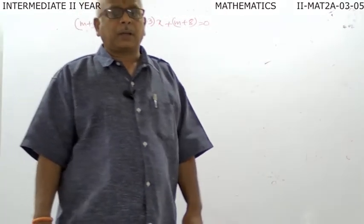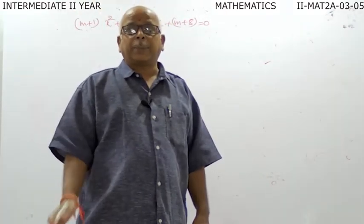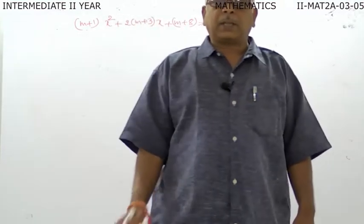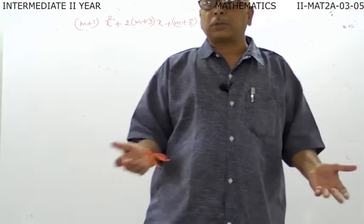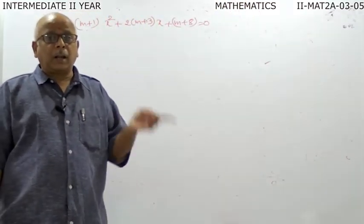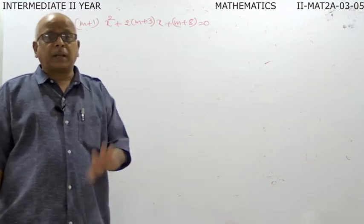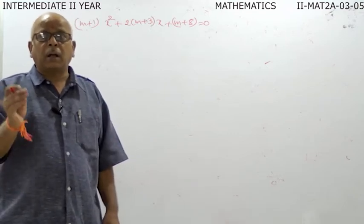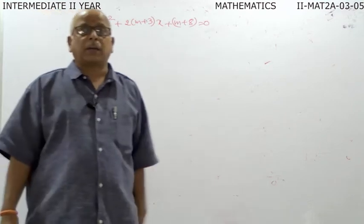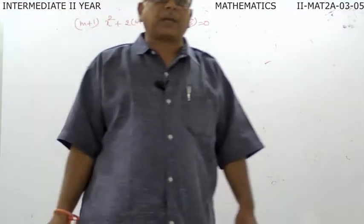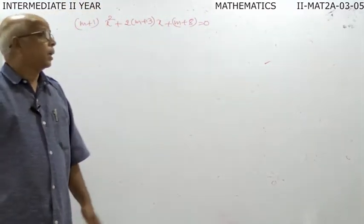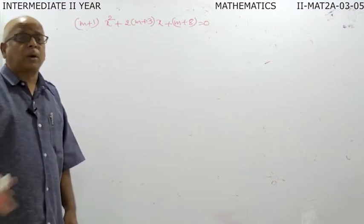For example, in the last class we discussed: if 3 plus 2i is one root, obviously the other root will be 3 minus 2i. So there is no question of equality. That is why he is not mentioning real and equal or complex and equal roots — there is no question of equality in complex roots. Hence, equal roots means real only; that meaning is inherently involved in the word.